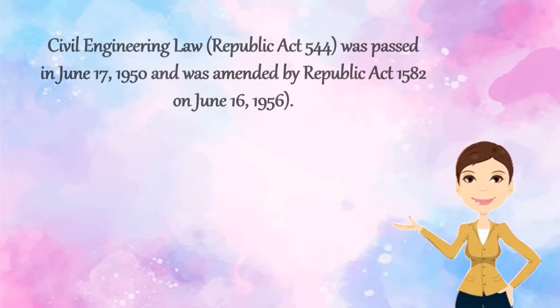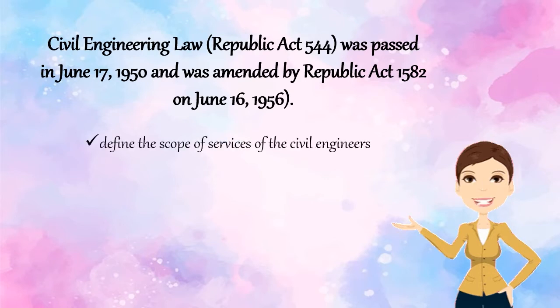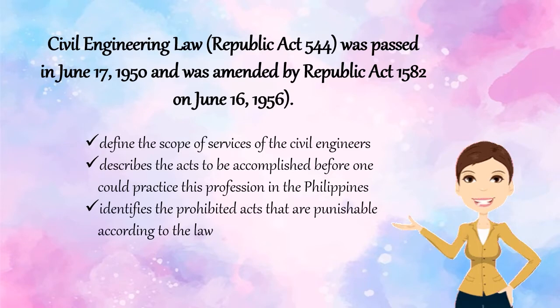Civil engineering law, or Republic Act 544, was passed on June 17, 1950 and was amended by Republic Act 1582 on June 16, 1956. It aims to define the scope of services of civil engineers, prescribe the acts to be accomplished before one could practice this profession in the Philippines, and identify the prohibited acts that are punishable according to the law.